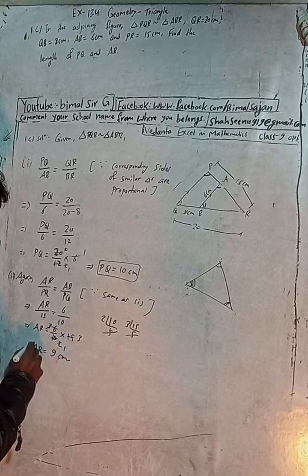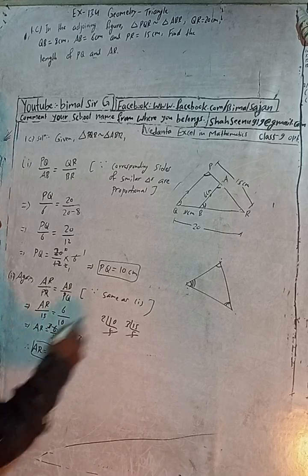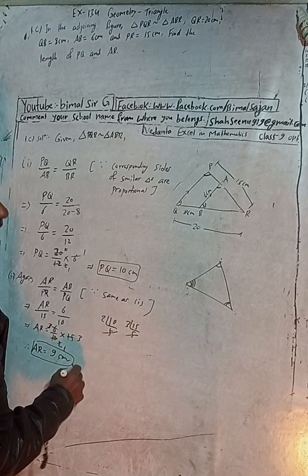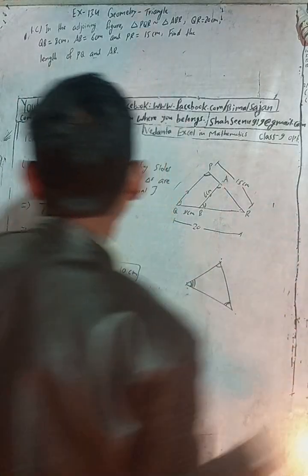So we have found both answers. PQ is equal to 10 cm and AR is equal to 9 cm. Both answers match with the book.